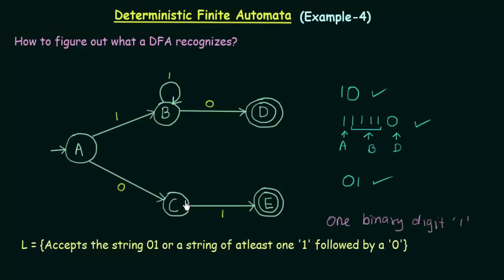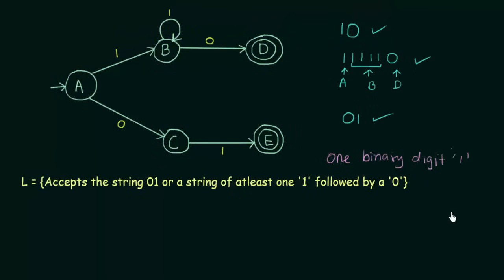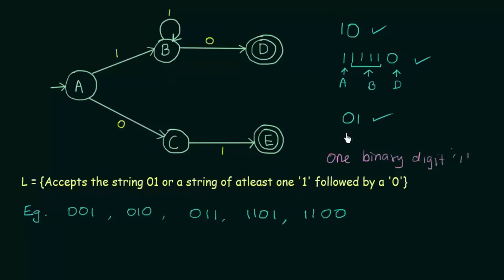Now let me write down some strings and see what happens when we pass them to this DFA. For example, let me take the strings: 001, 010, 0110, 011, and 1101. Starting from the starting state — I get 0 and come to state C, and I know if I get a 1 I should go somewhere, but if I get a 0, where should I go? I have no more place to go. Is that wrong?